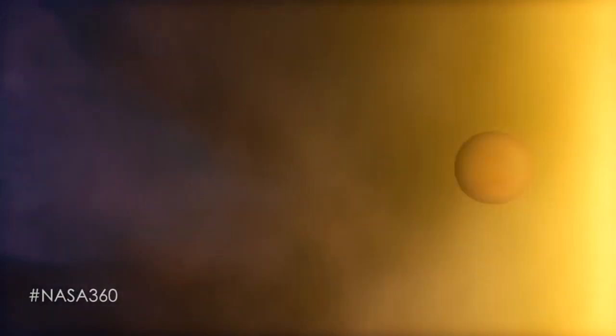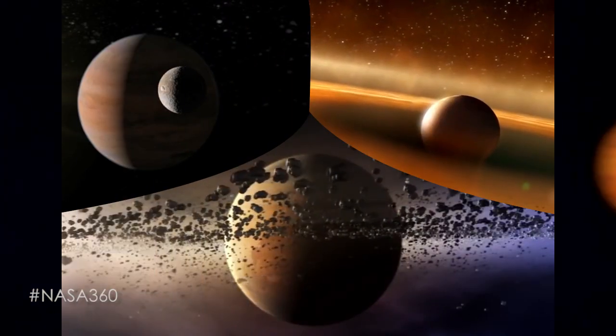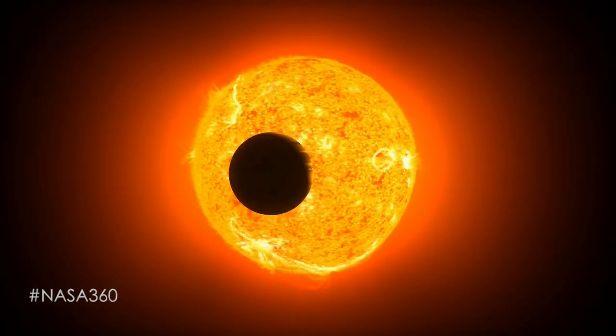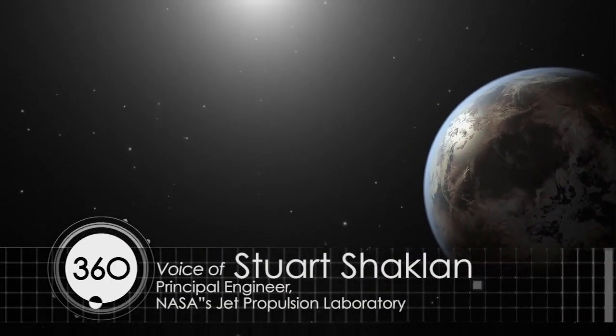An exoplanet is a planet around a star other than our Sun. There are about 2,000 known exoplanets in the universe. So thousands of planets are known, but almost none of them are the size of Earth.